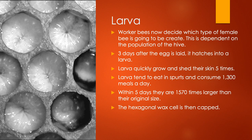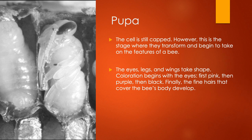After this, we move on to the pupa — the third stage. While the cell is still capped, the pupa transforms and begins to take on the features of a bee. They actually start to get their eyes, their legs, and their wings — they all take shape. The colour of their eyes begins: first of all their eyes are actually pink, then they turn purple, and then finally they turn to black. The last thing that happens is that the fine hair that covers the bee's body develops.